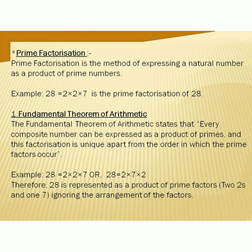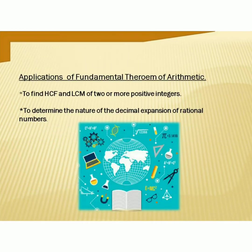Next is our main point: the fundamental theorem of arithmetic. It states that every composite number can be expressed as a product of primes, and this factorization is unique apart from the order in which the prime factors occur. For example, 28 can be expressed as 2 × 2 × 7, or the same number as 2 × 7 × 2. The theorem states you can express every composite number as a product of primes, and the arrangement of factors does not matter.